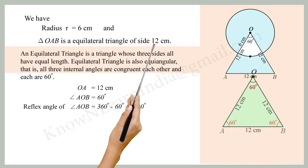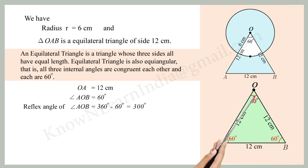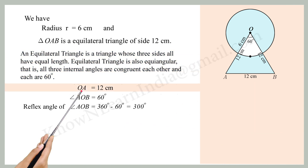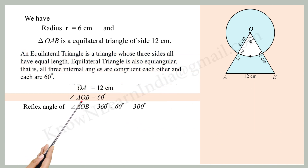An equilateral triangle is a triangle whose three sides have equal length. It is also equiangular — that is, all three internal angles are congruent to each other and each measures 60 degrees. OA equals 12 cm, and angle AOB equals 60 degrees.